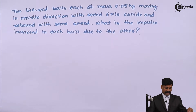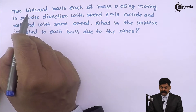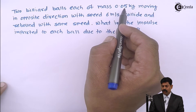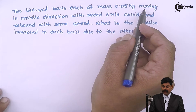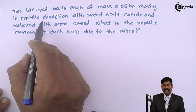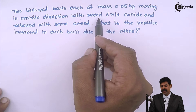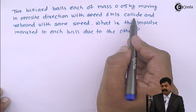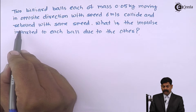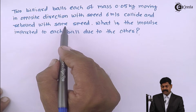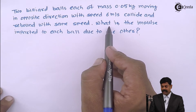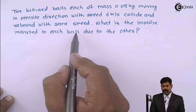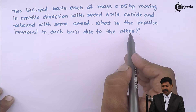Now the second sum: two billiard balls, each of mass 0.05 kg, moving in opposite directions with speed 6 meter per second, collide and rebound with the same speed. What is the impulse imparted to each ball due to the other?